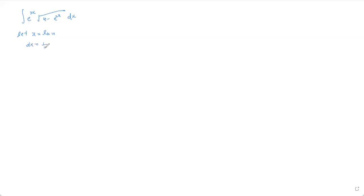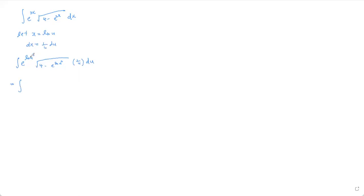If you differentiate x = ln u, you get dx = 1/u du. Substituting in, the integral becomes ∫ e^(ln u)³ · √(4 − e^(ln u)²) · (1/u) du. Simplifying, e^(ln u) cubed is just u³, and u³ times 1/u gives u². So we have ∫ u² · √(4 − u²) du.